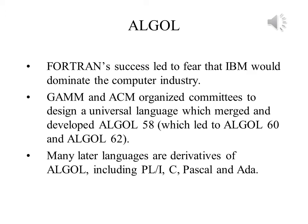GAM, the German Society of Applied Mathematics and Mechanics, worked together with ACM, the Association for Computing Machinery, to develop an alternative to FORTRAN. They both organized committees that were to design universal languages. These efforts led to ALGOL, the algorithmic-oriented language.